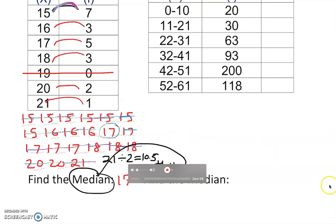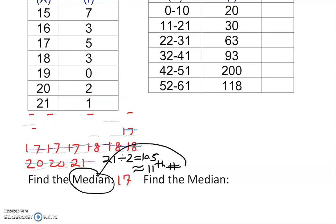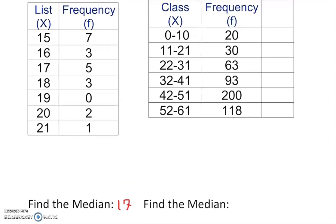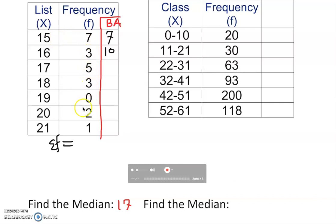Now I'm going to show you another quick method — I call it opening a bank account. If you have a bank account, you know what this means. You start with some money. Add all the frequencies: 7, 10, 15, 18, 20, 21. The sum of frequencies is 21. Divide by 2 to get 10.5, so we are looking for the location of the 11th number.